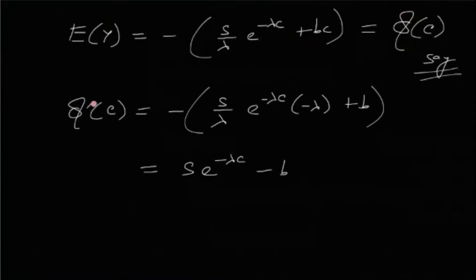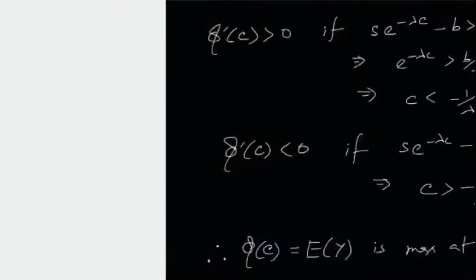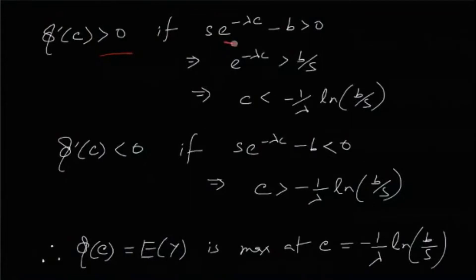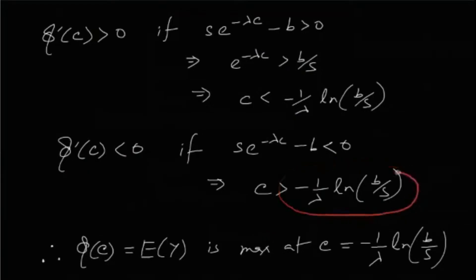Let this be a function Phi of C. Differentiating with respect to C, Phi prime of C equals negative S over lambda times e to the minus lambda C times negative lambda, plus B. This is the first derivative of Phi with respect to C. Phi prime of C is greater than zero if C is less than minus 1 over lambda times the natural log of B over S.